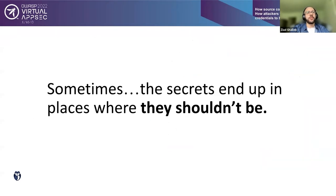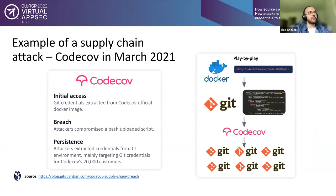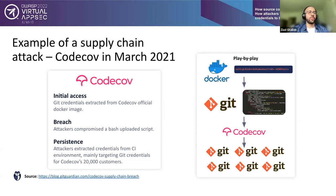All these different components authenticate against each other with the help of secrets. When secrets end up exposed, they will be used by attackers for malicious purposes. One example is the famous supply chain attack on Codecov in March 2021. Sophisticated attackers exploited a mistake in how Codecov built its Docker images, modifying a script that sent environment variables from CI environments where Codecov was used by customers to the attacker's remote server.